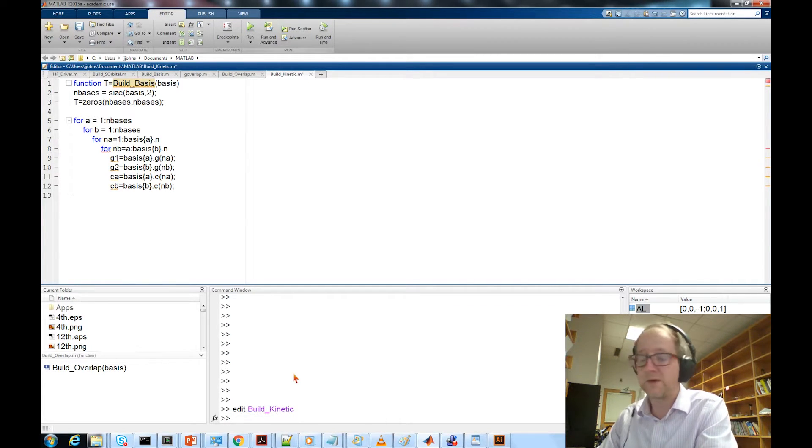Now we need to apply our Gaussian product theorem. Our new exponent p is going to be the sum of the two exponents for the two different Gaussians, so g1 dot alpha plus g2 dot alpha. And then our x, y, and z coordinates of the new Gaussian centered between Gaussian 1 and Gaussian 2 is the weighted mean of the original coordinates. So px equals g1 dot alpha times g1 dot x naught plus g2 dot alpha times g2 dot x naught divided by p.